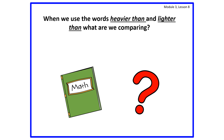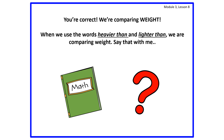When we use the words 'heavier than' and 'lighter than,' what do you think we're comparing? What's the math word we learned for comparing using the words 'heavier than' and 'lighter than'? Think big. I'll give you five seconds to think about that vocabulary word. You're right. We're comparing weight. When we use the words 'heavier than' and 'lighter than,' we are comparing weight.